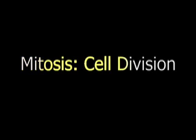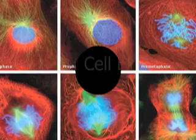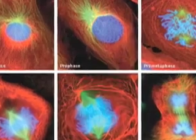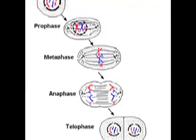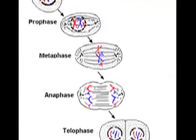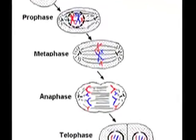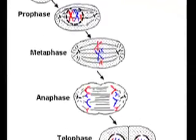Mitosis cell division is the process of sorting and distributing the chromosomes to form the nuclei. Mitosis has four stages: prophase, metaphase, anaphase, and telophase.